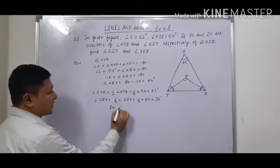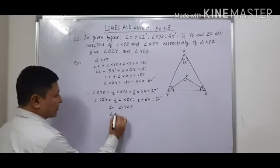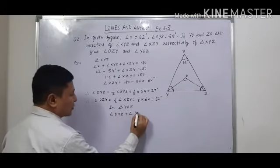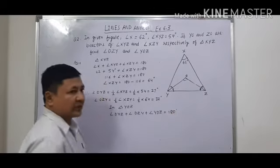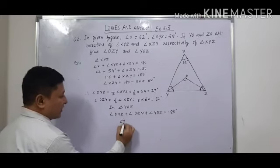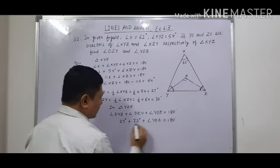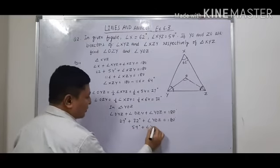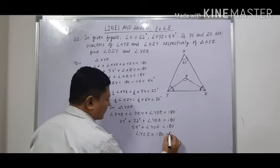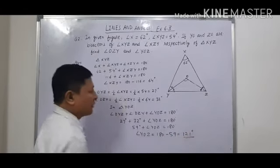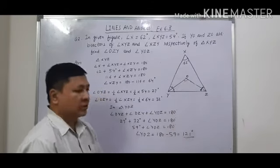Now we take the smaller triangle YOZ. In triangle YOZ, angle OYZ plus angle OZY plus angle YOZ is equal to 180 degrees, since the sum of all angles of a triangle is 180 degrees. Angle OYZ is 27 degrees and angle OZY is 32 degrees, which together make 59 degrees. So angle YOZ is equal to 180 minus 59, which gives angle YOZ equal to 121 degrees. Therefore, angle OZY is 32 degrees and angle YOZ is 121 degrees.